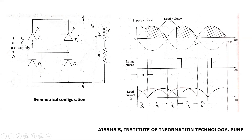Here I have shown a symmetrical configuration of the semi-controlled converter. The input given to the rectifier is an AC supply, and at the output terminals an RL load is connected. The magnitude of the inductor in the RL load is large enough to maintain a flow of continuous current through the load. The waveforms shown include supply voltage, output voltage, triggering pulses for thyristors T1 and T2, and load current.